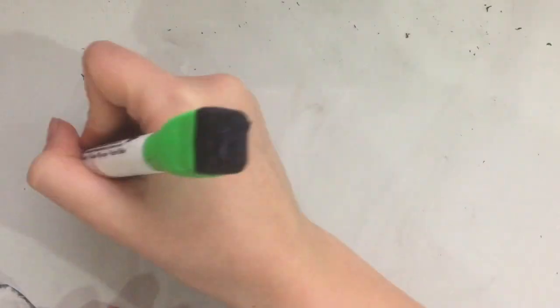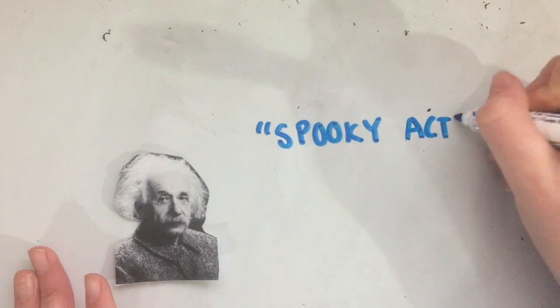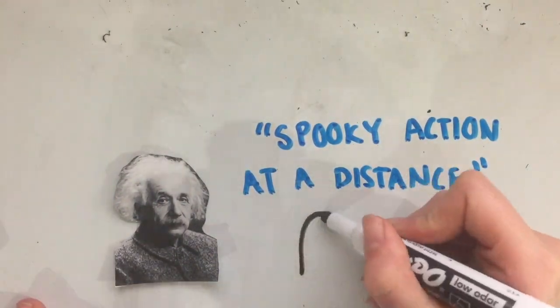Einstein disagreed with this completely. He thought that, for example, an electron here is the same as an electron there, and that the act of observing something does not affect or change its state, even calling Bohr's idea of quantum entanglement, quote, spooky action at a distance.